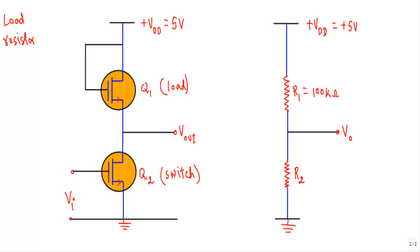The gate terminal of transistor Q1 is connected to the 5V source, which means transistor Q1 will always be in the ON state. However, its ON state resistance will be around 100 kilo-ohms.